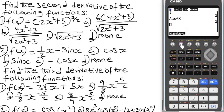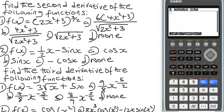Let's begin differentiating the functions one by one. Delete everything — press F2, F2 again, then F1. For question one on the second derivative, press F4 for Math. When you press F4 you see d²/dx² — that's the second derivative. Press F5 for it. Now input the function: f(x) = (2x² + 3)^(3/2).